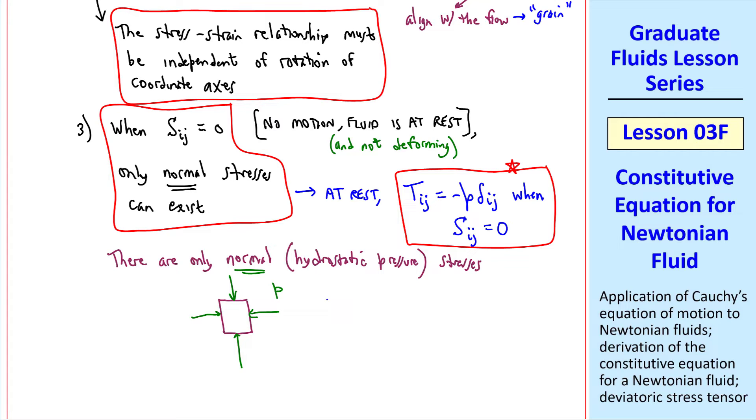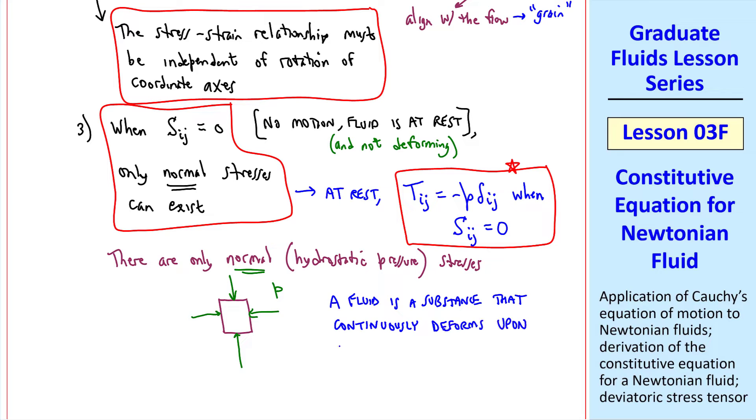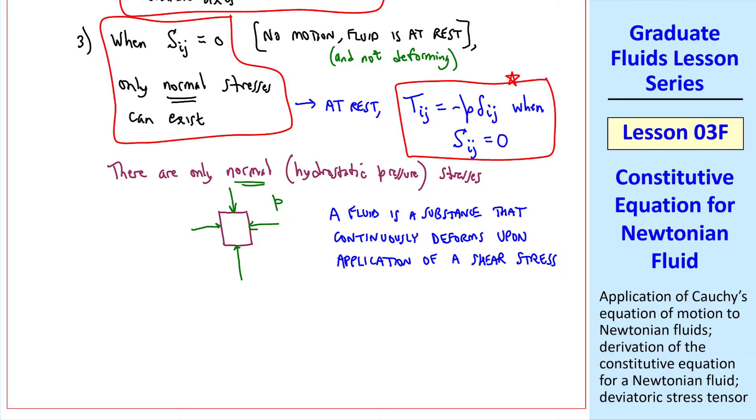One of the first statements in my fluid mechanics book is that a fluid is a substance that continuously deforms upon application of a shear stress. In other words, as soon as you add a shear stress to this fluid particle, it will move and deform, and therefore cannot tolerate a shear stress while it is stationary.